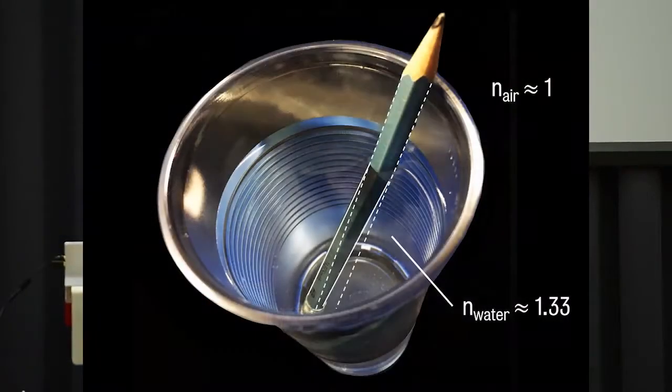So why does this bending happen? It's because of the refractive index of the material. So here we have a refractive index of air, which is one. This tells us how much light is slowed down when it propagates in a medium. And here water is 1.33. And this change in the speed of light causes this refraction.